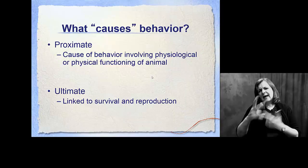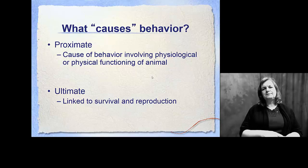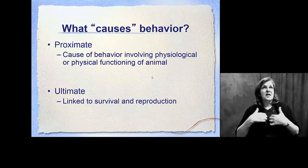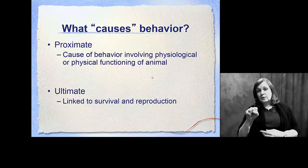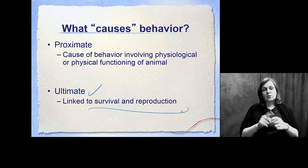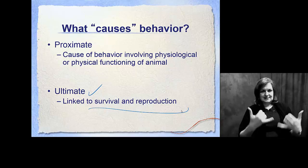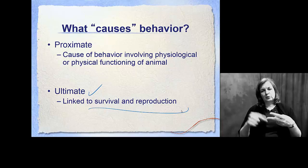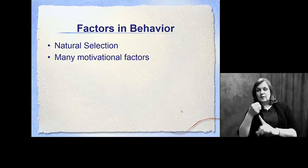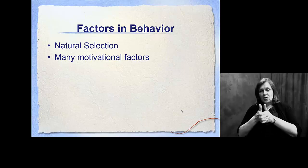What causes these kinds of behaviors? We have two different causes. One is what we call proximate — something that causes the behavior to occur because of some function of the animal, such as hunger or hormone levels that signal it's time to mate or migrate. Ultimate cues, however, are linked directly to survival and reproduction — immediate situations you need to respond to. Over time, these cues have huge effects on natural selection, evolution, and an organism's motivation for a particular stimulus.